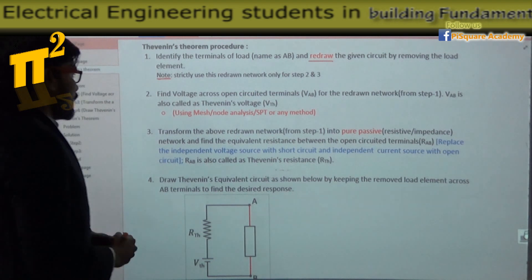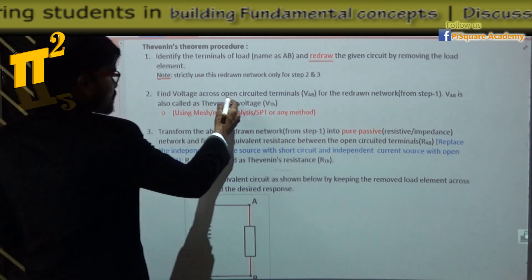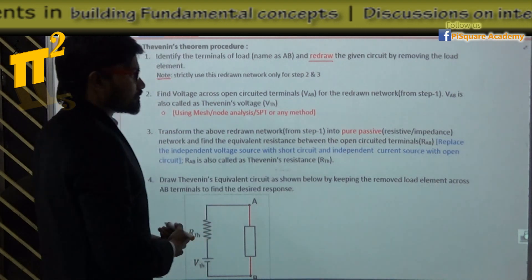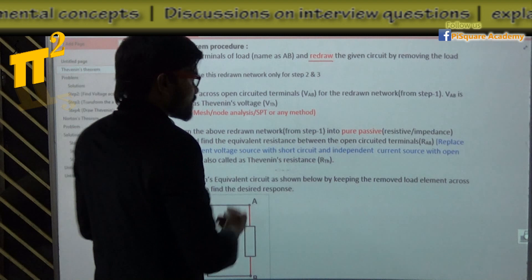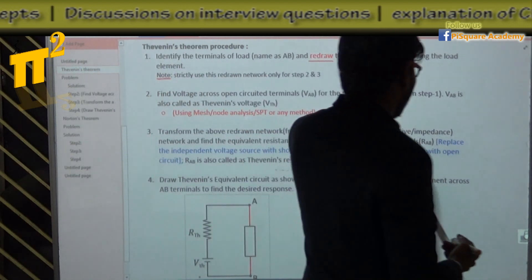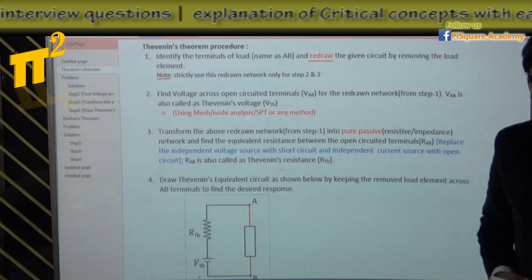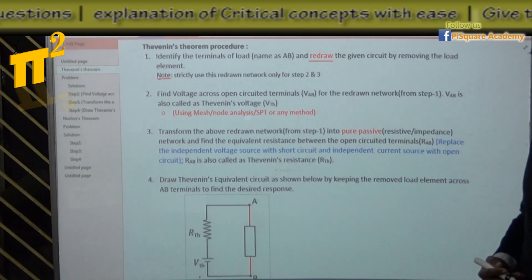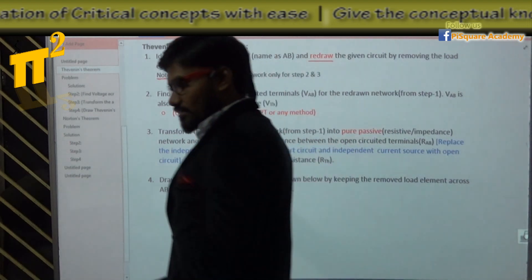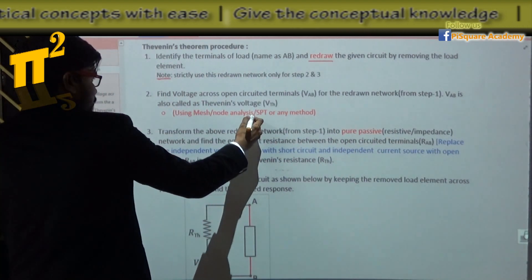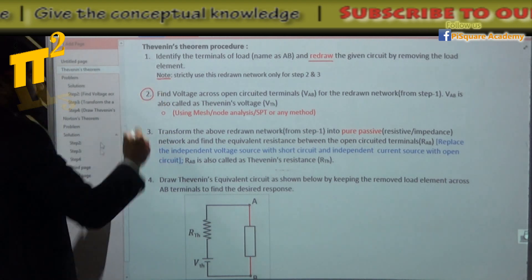Step 2: find the voltage across the open-circuited terminals. You have opened the load and now you find voltage across the open-circuited terminals for the redrawn network. That voltage is also called Thevenin's voltage. You may use mesh analysis, node analysis, superposition theorem, or any method to complete step 2.